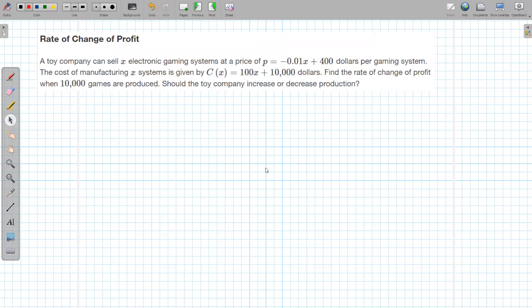So here we have a rate of change of profit, the classic example from basic economics. A toy company can sell x electronic gaming systems at a price p, little p here, that equals negative one hundredth x plus four hundred dollars per gaming system.